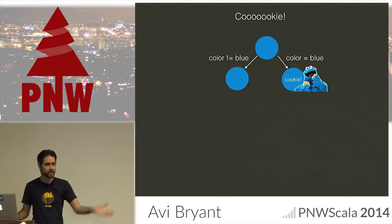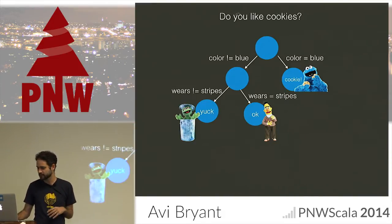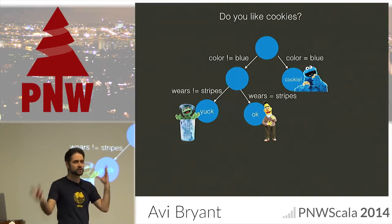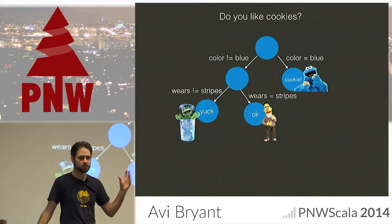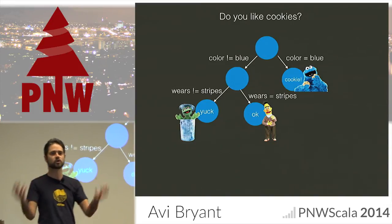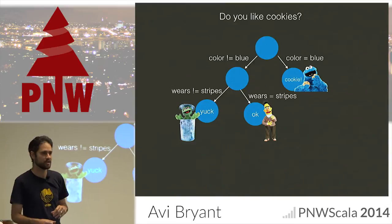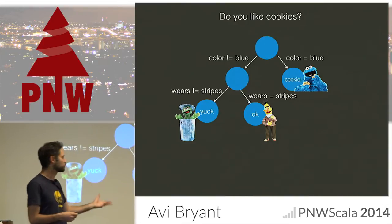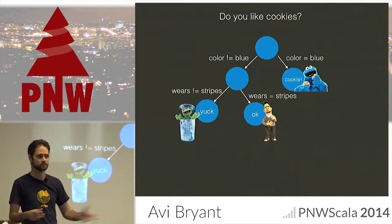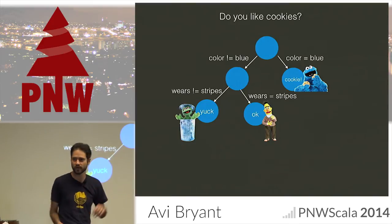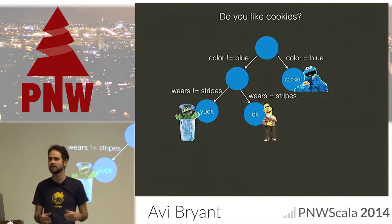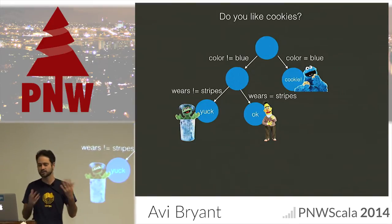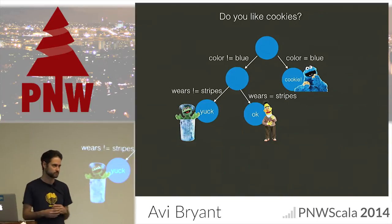It could go the other way. We could have gone down the other path, and that might not have been a leaf node — there might have been more to the tree, so we recurse. We have some other question we ask — do you wear stripes? If you do, go this way; if you don't, go that way. We come to new leaves, and those leaves might have additional predictions.